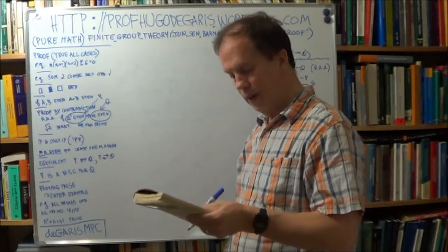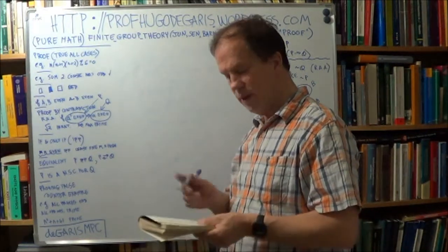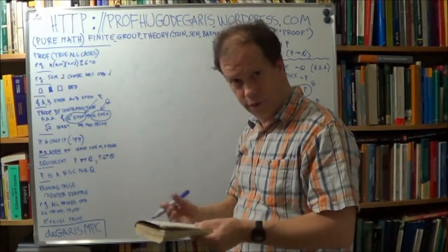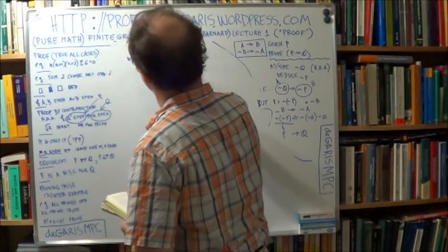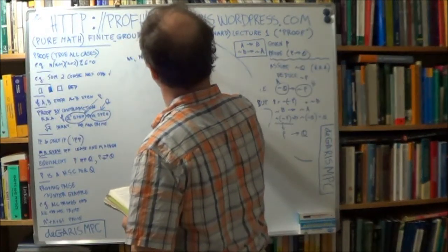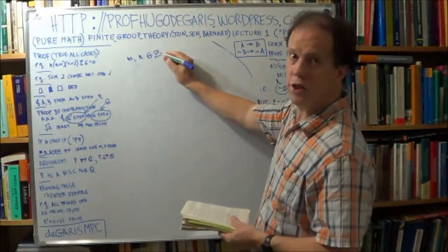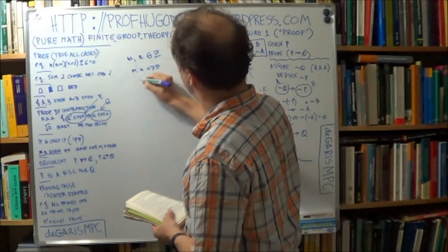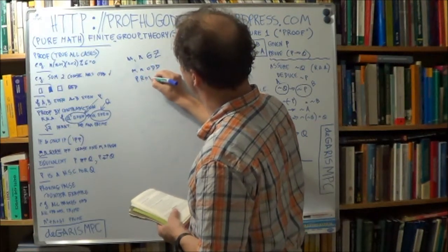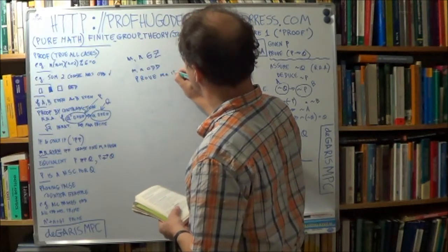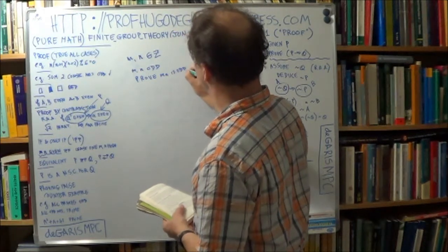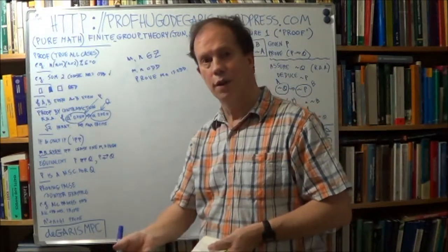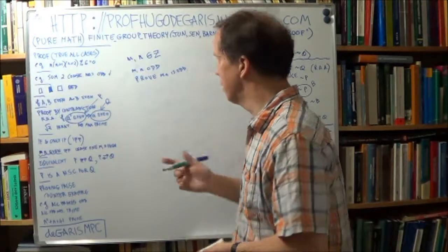Prove that the product of two odd numbers, and by number I mean integers, so prove that the product of two odd integers is itself odd. How do you do that?